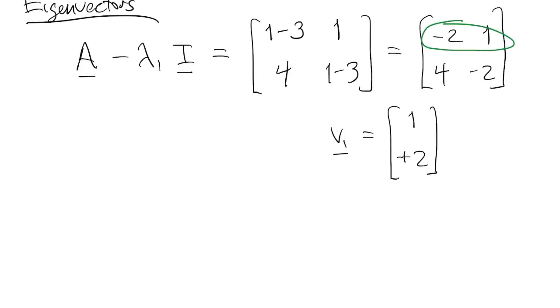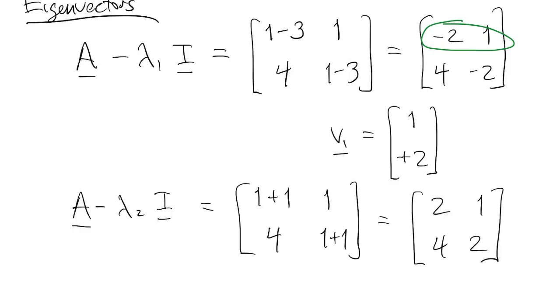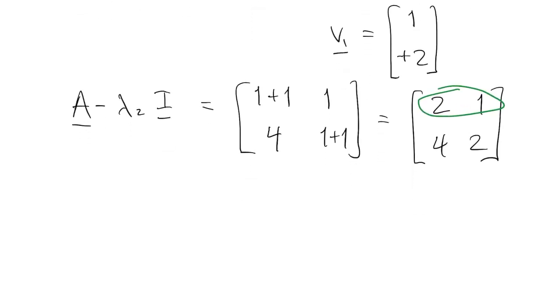Then for lambda 2, we do a minus lambda 2 times i. And we're again going to use our 2 by 2 shortcut, take the first row, reverse the order, and hit 1 with a negative sign.